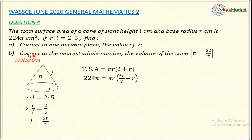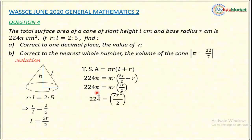Simplifying the bracket: 5R/2 + R = 7R/2. So 224π = πR × 7R/2. The π cancels on both sides, leaving 224 = 7R²/2. Clearing the fraction, 224 × 2 = 448, then dividing both sides by 7 gives R² = 448 ÷ 7 = 64.